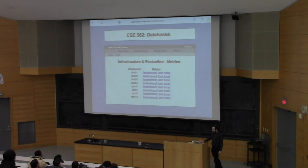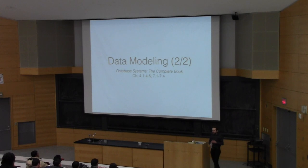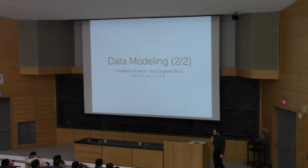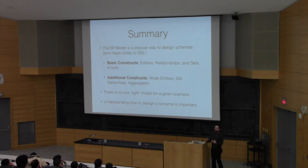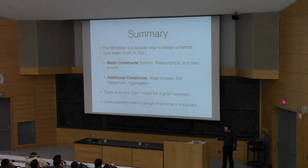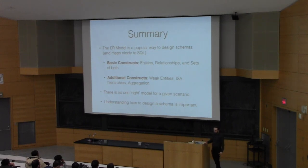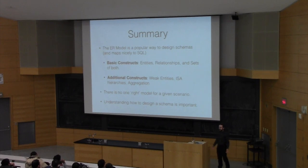Let's get going with today's lecture. Last class, we took a little bit of a break from the systems implementation side of things to talk about how databases are designed — in particular, how to go about designing the schema for a database. We introduced the entity relation model, which was a nice way to think about how a schema should be designed, with basic constructs called entities and relationships between entities, and sets of entities and sets of relationships. We also talked about weak entities, hierarchies, and aggregation. The entity relationship model doesn't give you one specific way of modeling a particular dataset, but it's a great way to think about the various strategies you can take to model a given dataset.